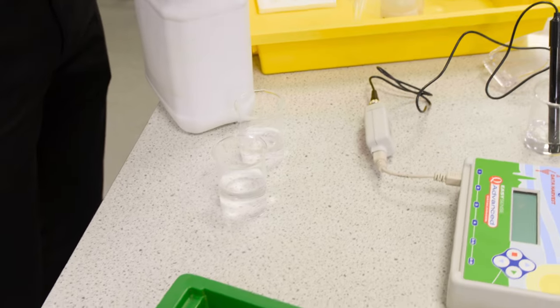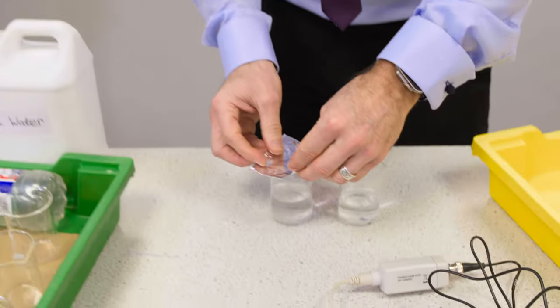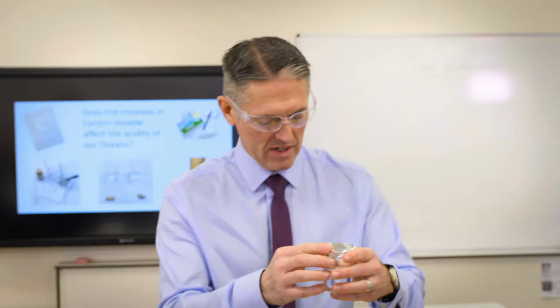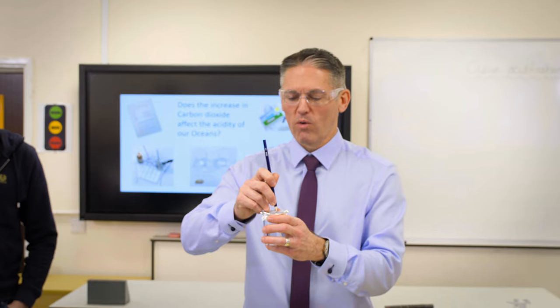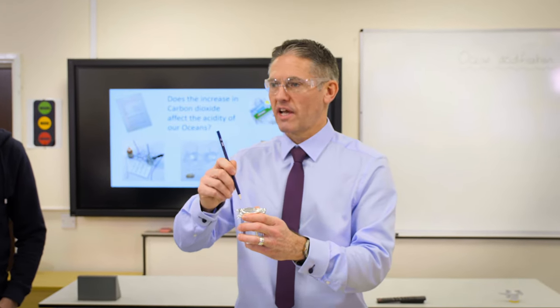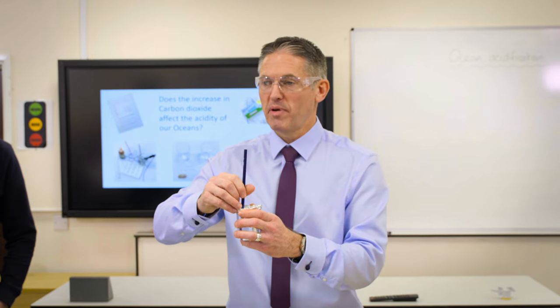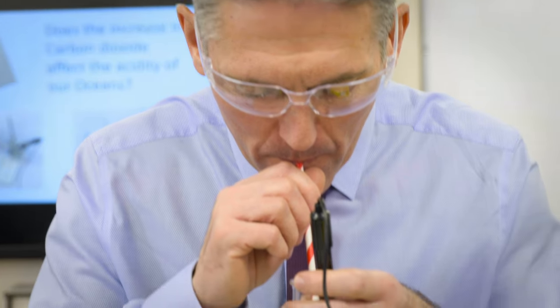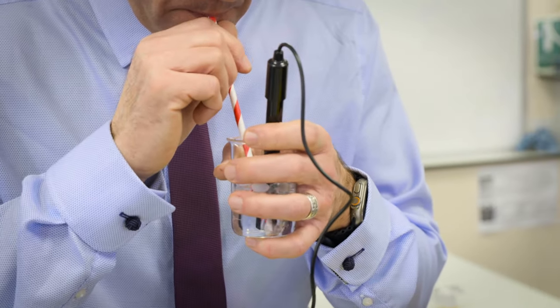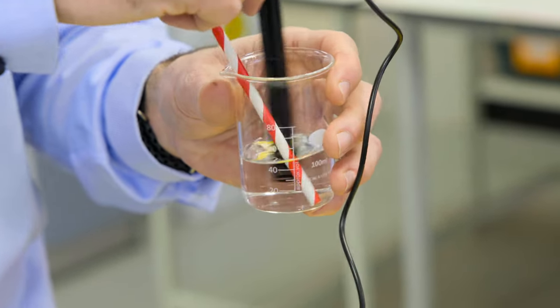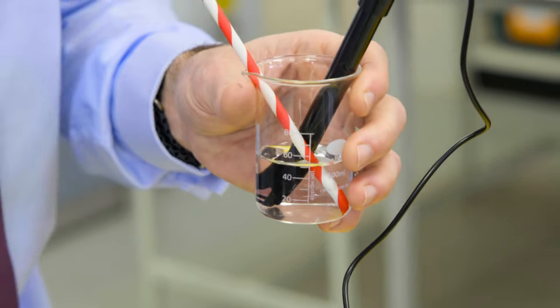We've got two beakers with 60 centimetres cubed of seawater. You're going to place a lid on one of them, which is tin foil. Using the sharp pencil on your desk, place a hole in there — that's where your straw is going to go. Then place a second hole, because that's where the pH probe is going to go. Take a deep breath, hold it for a few seconds, and then start blowing. On that 30 seconds, you stop, give a little stir with the pH probe, and then take the reading off the pH meter and place it into your table.